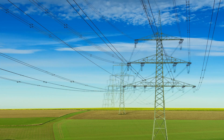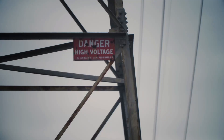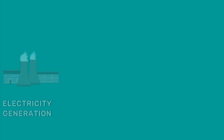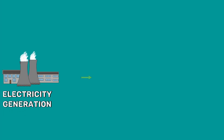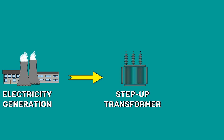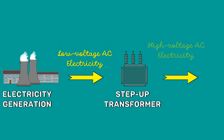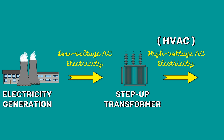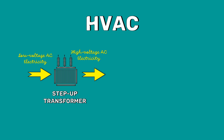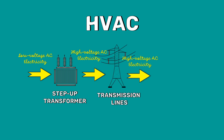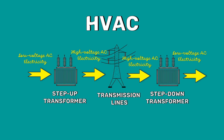Electricity is transmitted at very high voltages to reduce the losses. Therefore, the generated electricity is first transmitted to the step-up transformer, which converts low voltage electricity into high voltage electricity. The typical high voltage AC transmission consists of a step-up transformer, transmission lines, and at the receiving end, a step-down transformer for distributing the transmitted electricity.